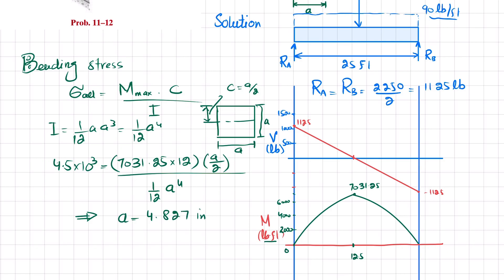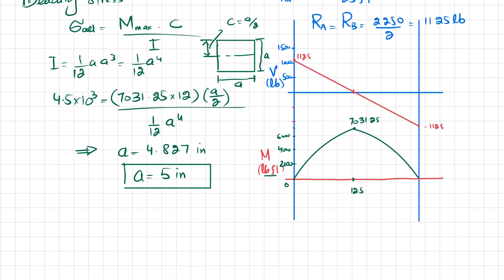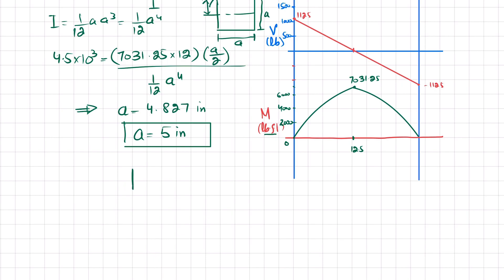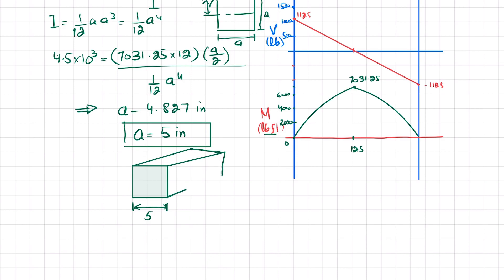The result is a equals 4.827 inches. Rounding up to the nearest quarter inch gives approximately 5 inches, which is the safer value. So the timber beam made of oak will have a width of 5 inches and a height of 5 inches as the square cross section joist for the floor.